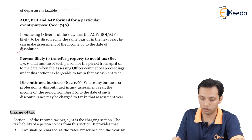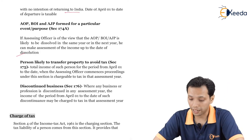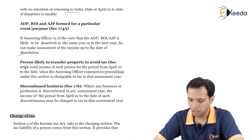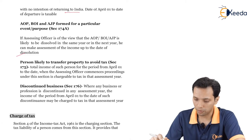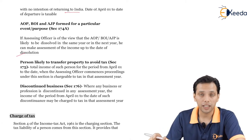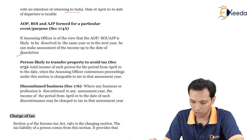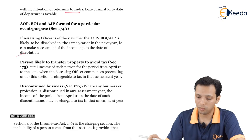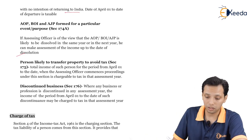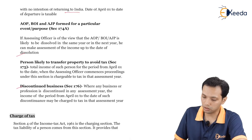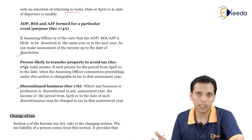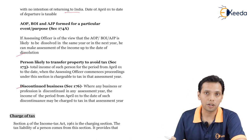If the assessing officer is of the view that an AOP, BOI, or AJP is likely to be dissolved in the same year or next year, he may make the assessment of income up to the date of dissolution. Fourth: a person likely to transfer property to avoid tax under section 175 — the period from 1st April to the date when the AO commences proceedings will be chargeable to tax in that previous year. Fifth: discontinued business — the period from 1st April to the date of discontinuance is charged to tax in that year itself.